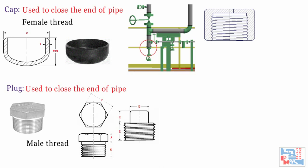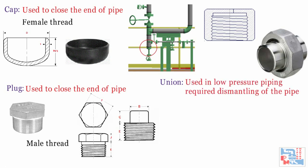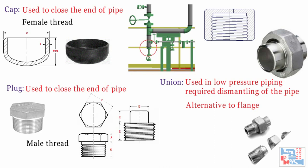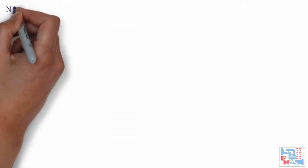Unions are used in low-pressure piping where dismantling of the pipe is required frequently. They are used as an alternative to flanges. A union can have threaded or socket welded ends. There are three pieces in a union: two end pieces attached to the run pipe, and a third threaded piece to connect these two. A metal-to-metal seating ensures sealing.